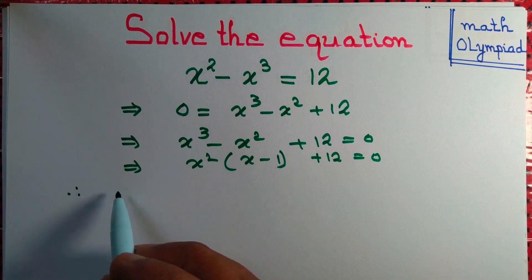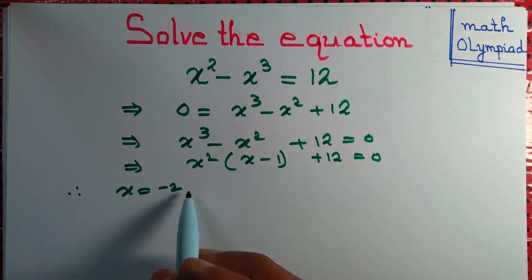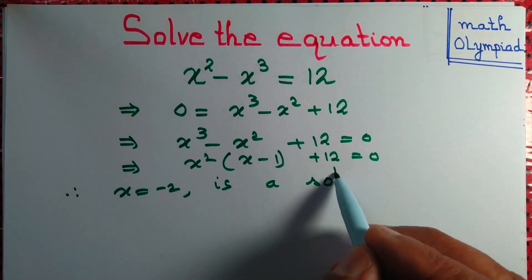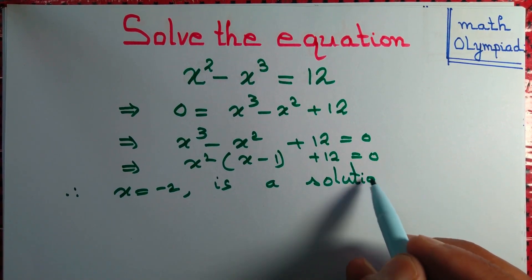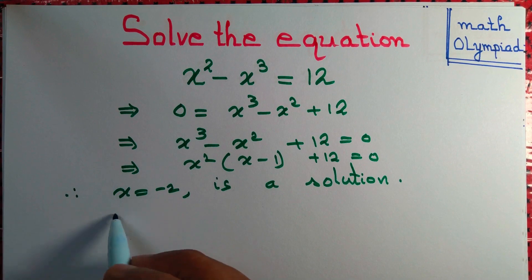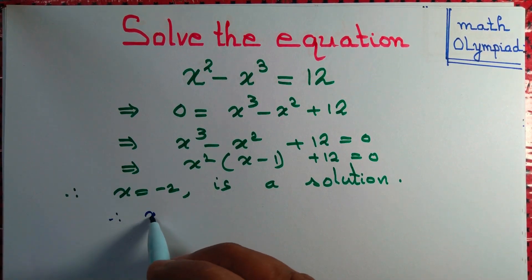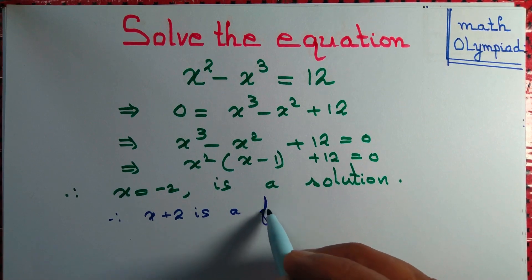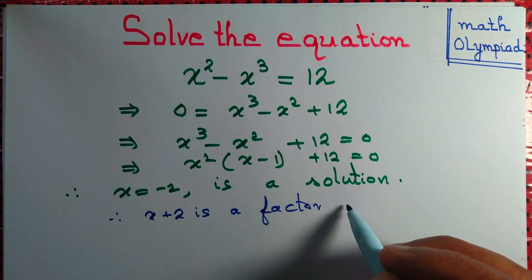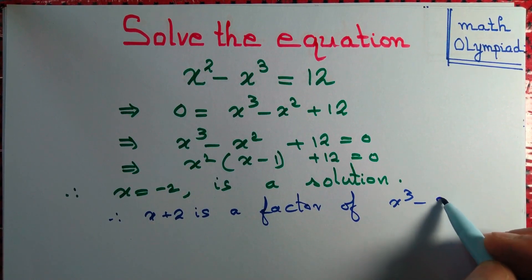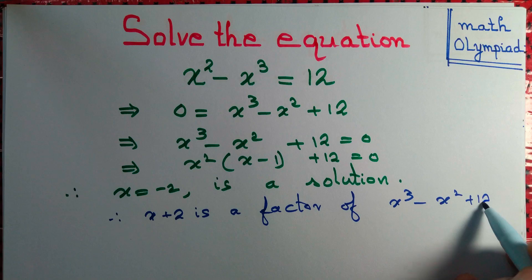Therefore, x equals minus 2 is a solution. Now we know that if x equals a is a solution, then x minus a is a factor. Therefore, x plus 2 is a factor of x cube minus x square plus 12.